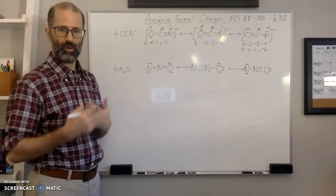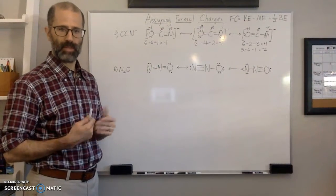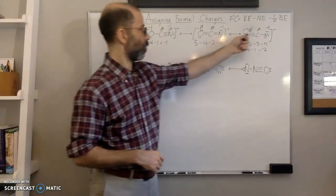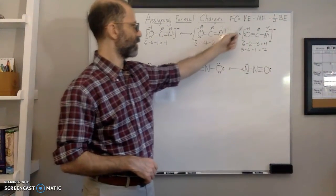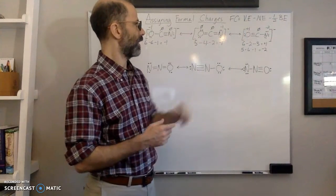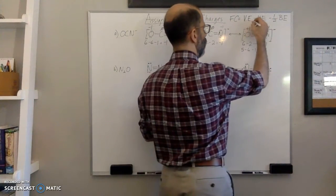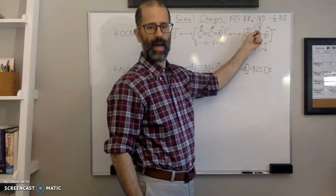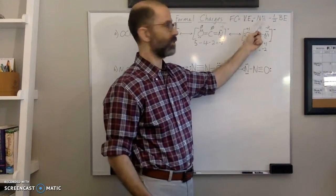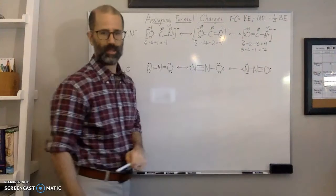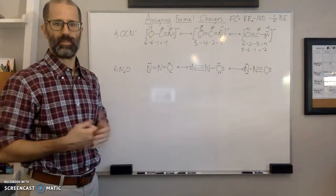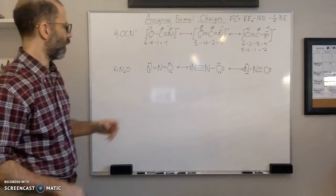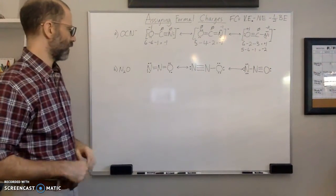You can do that if you know the common bonding patterns, or you can calculate using this formula: formal charge equals the number of valence electrons in your element based on the periodic table, minus the non-bonding electrons (the lone pairs), minus one half the bonding electrons (the electrons in the bonds), which basically comes to one electron per bond.